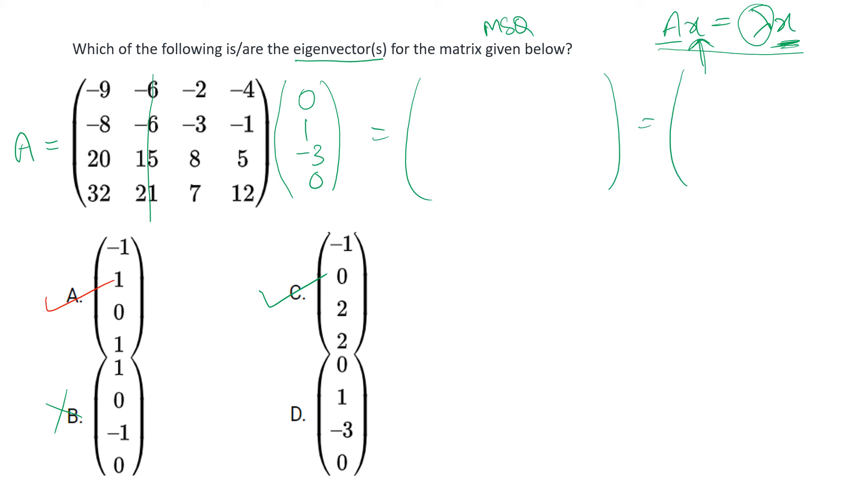So now proceeding with the last option D: zero, one, minus three, and zero. For this we will be striking off first and fourth columns because they are zeros. So the result will be minus six plus six.